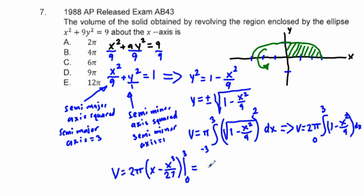That's going to equal 2 pi. We're going to have 3 minus 3 cubed, which is 27 over 27. That's going to equal 2 pi times 3 minus 1, or 2 pi times 2, so that's 4 pi. So our answer is B.